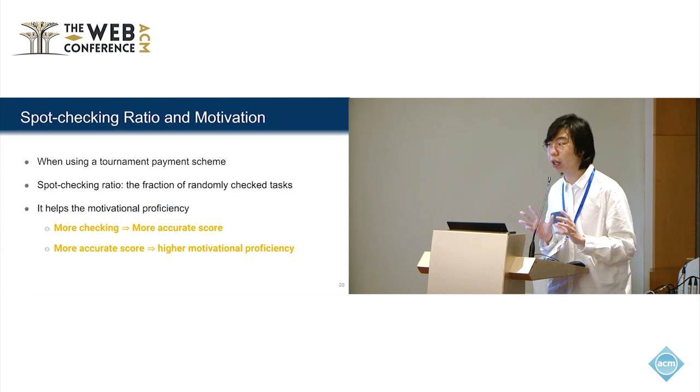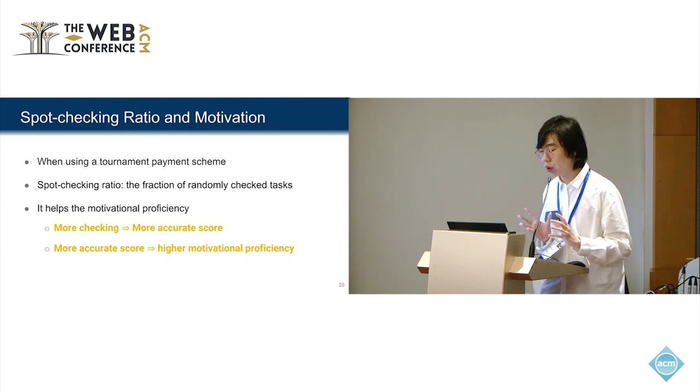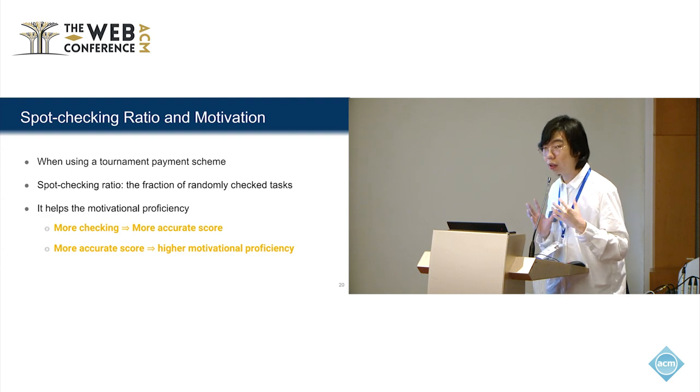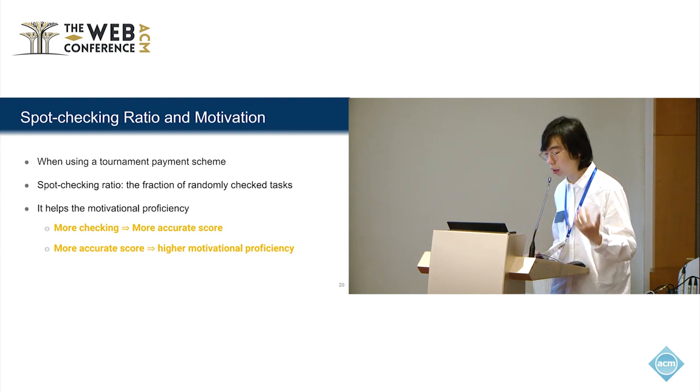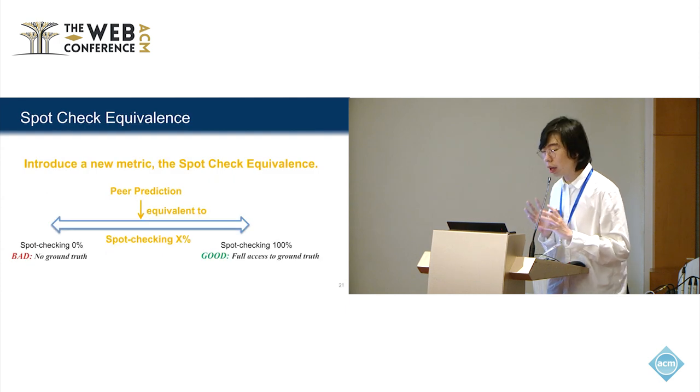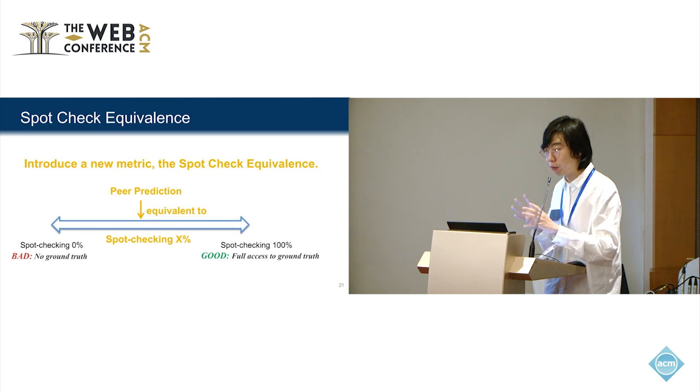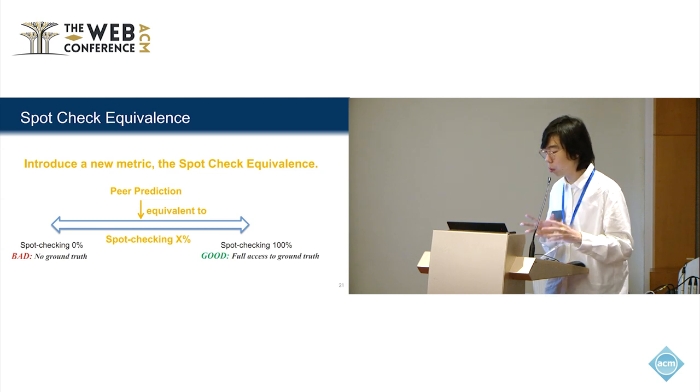Now we talk about how the spot-checking ratio impacts motivation. The spot-checking ratio is the fraction of randomly checked tasks. It helps the score accuracy. If we check more tasks, we get a more accurate score. And if the score is more accurate, it leads to higher motivational proficiency. Therefore, we can use that equivalent spot-checking ratio as some metric to measure the performance of a peer-prediction mechanism. It's a mapping from a peer-prediction mechanism to some spot-checking ratio.